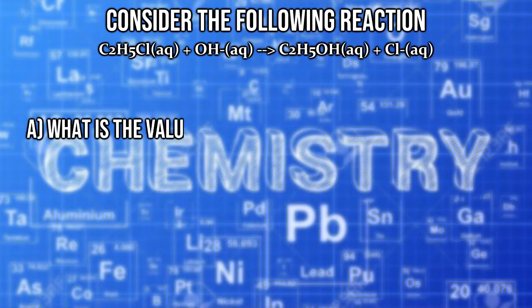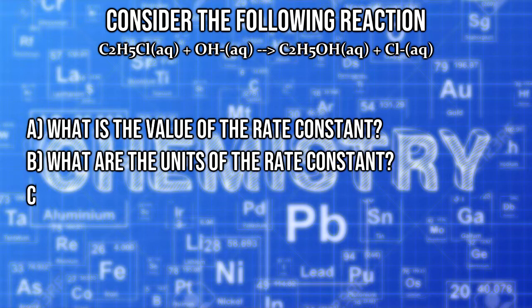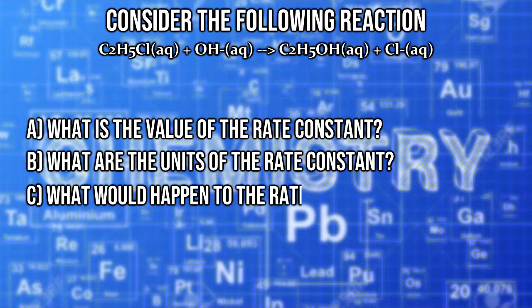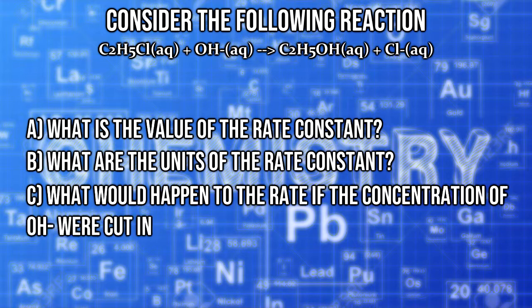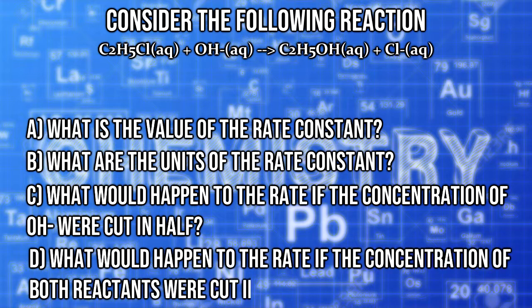Task A: what is the value of the rate constant? Task B: what are the units of the rate constant? Task C: what would happen to the rate if the concentration of OH- were cut in half? Task D: what would happen to the rate if the concentration of both reactants were cut in half?